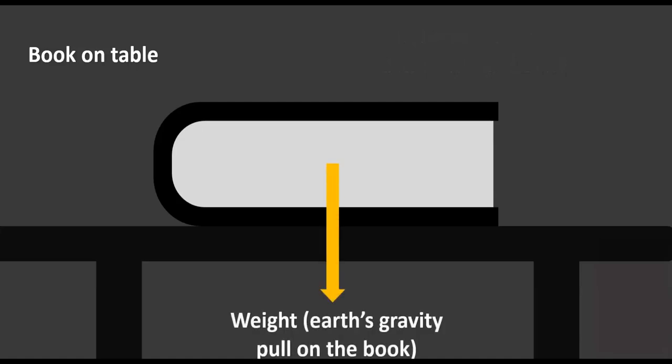In our previous lesson when we learned the four types of forces, we learned that every object on Earth will experience a downward gravity pull by the Earth, and that is its weight. Then because the book is touching the table, there is also a contact force acted on the book. These two forces are balanced. There is no resultant force, hence the book is at rest, not moving.